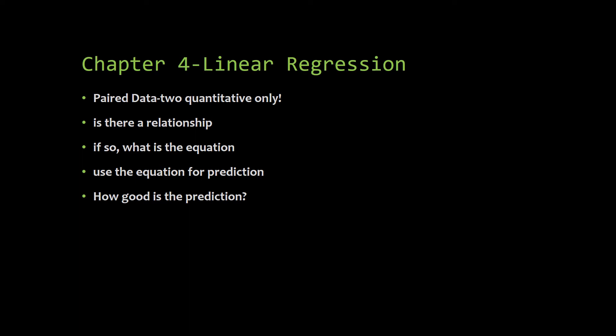After we got done with one variable each, we did two variables. We looked at linear regression and we said, I got some data. The first question we asked ourselves is, are these related? We use scatter plots to decide that. If it looks like they're related, how can I express the relationship? That was all about building an equation. Once we had an equation, we wanted to ask, is this accurate? How good is my prediction?